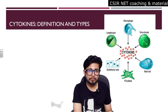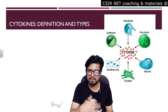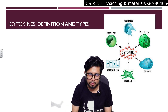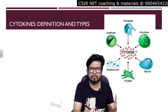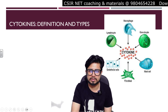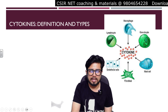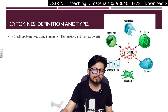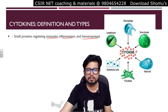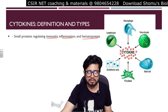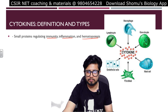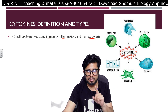Let's start with cytokines. Cytokines are chemical factors produced from different types of cells of our immune system — and not always immune cells, but other cells too. For example, cytokines can be produced from lymphocytes, macrophages, granulocytes, mast cells, fibroblasts, and endothelial cells. By definition, cytokines are small proteins regulating immunity, inflammation, and hematopoiesis — that is, the generation of blood cells in the body.